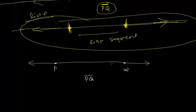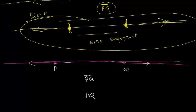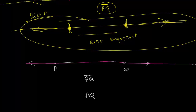So a line is an endless line segment — it will never end, it will just keep going on. Now here, this red colored line is passing through points P and Q. To represent a line, we write it the same as a line segment but we make arrows on both sides.